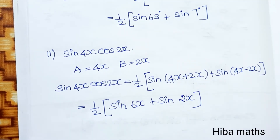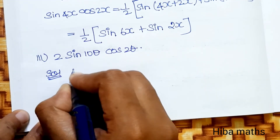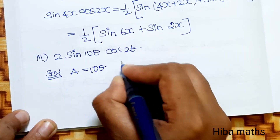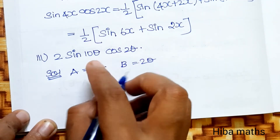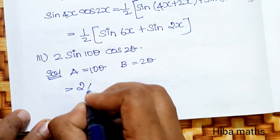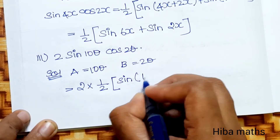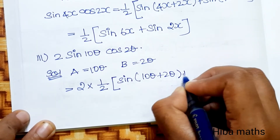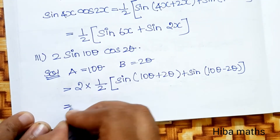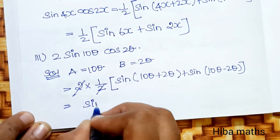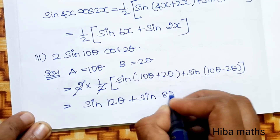Third subdivision: 2 sin 10θ cos 2θ. A = 10θ, B = 2θ — this is the sin A cos B format. So 2 × 1/2 [sin(10θ + 2θ) + sin(10θ − 2θ)]; the 2 and 1/2 cancel, giving sin 12θ + sin 8θ.